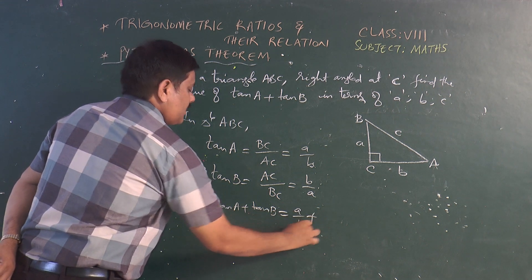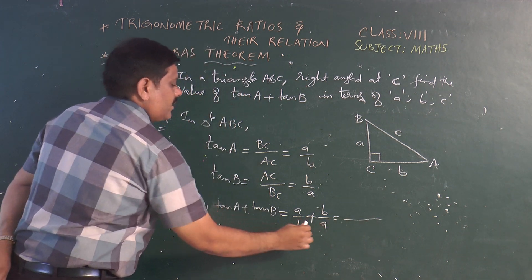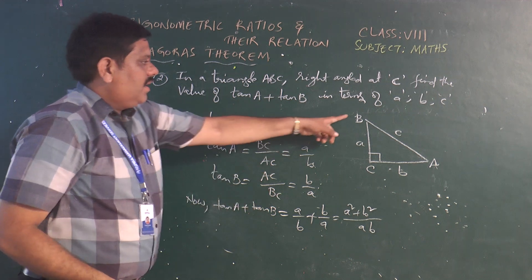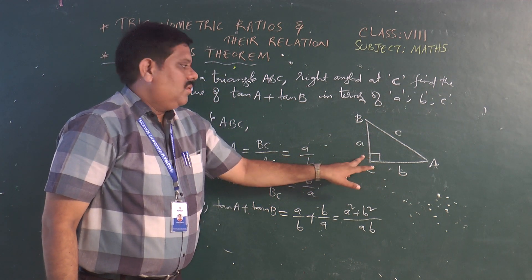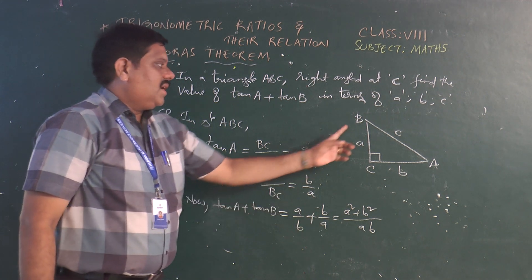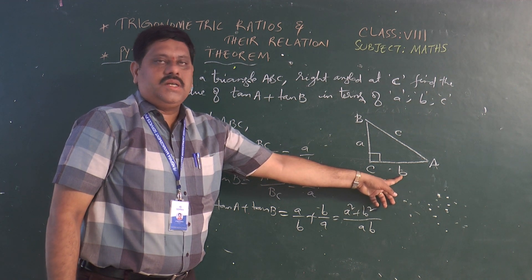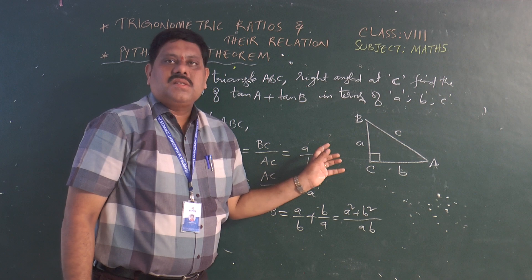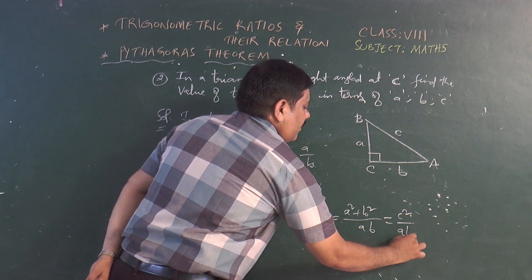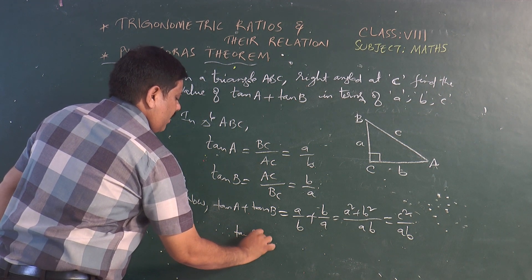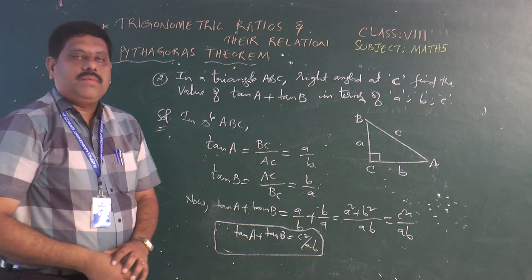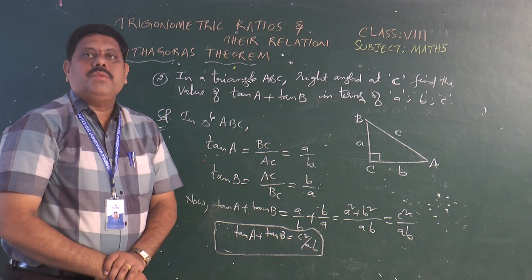Now we want tan A + tan B. That is a/b + b/a. Taking LCM as ab, that gives a² + b². Since A and B are the two sides including the right angle and C is the hypotenuse, by Pythagoras theorem, c² = a² + b². Therefore tan A + tan B = c² / ab.